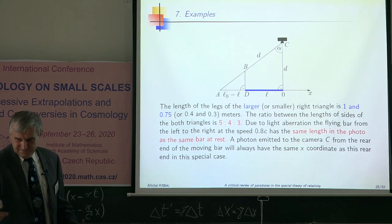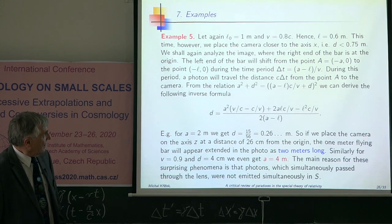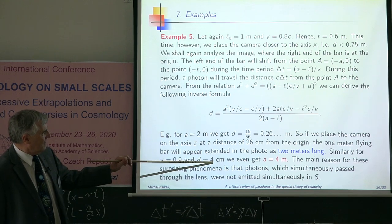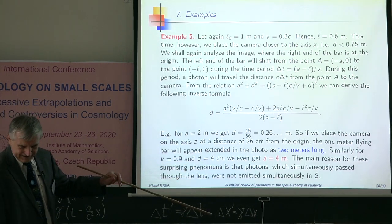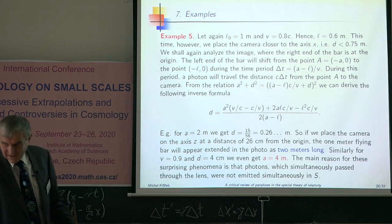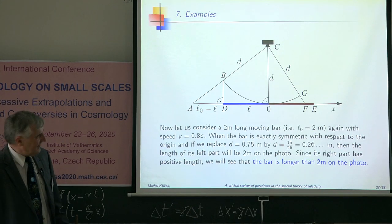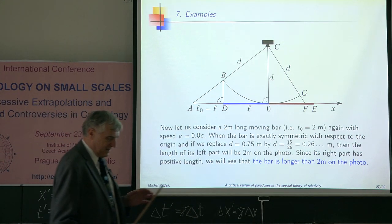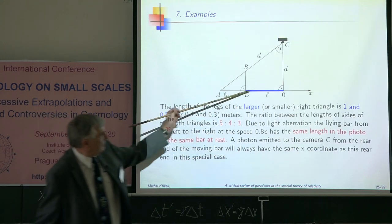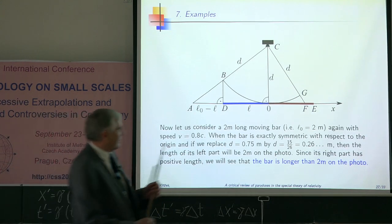It is in detail calculated in these proceedings. If it is only 4 centimeters from x axis, the bar will have 4 meters. Everything is very nonlinear. You may say that the bar was unsymmetric here. So let us put the bar symmetrically.